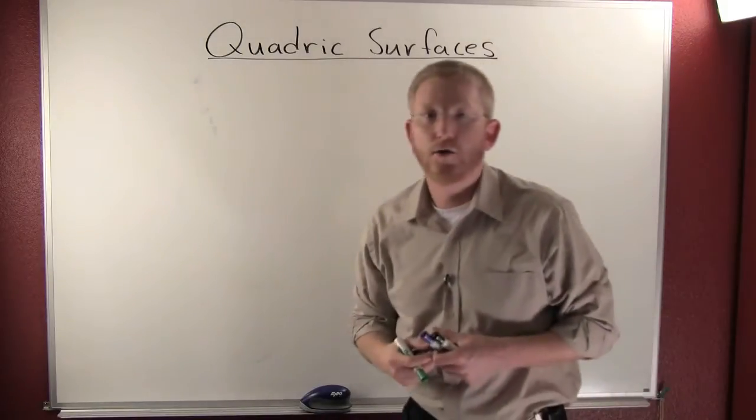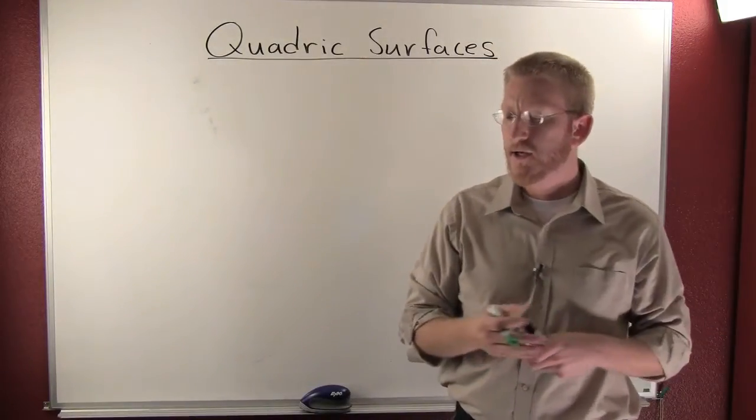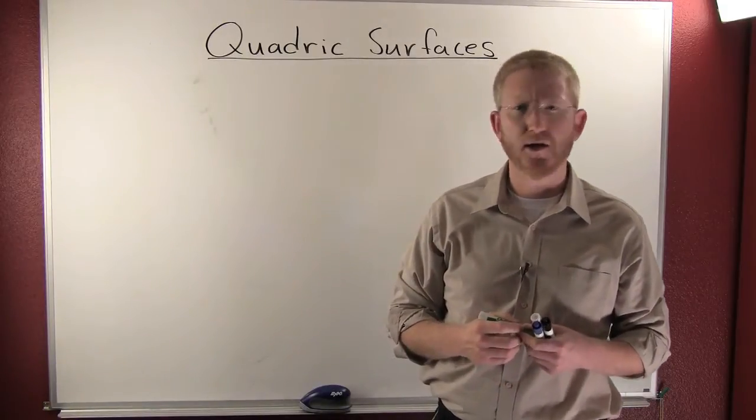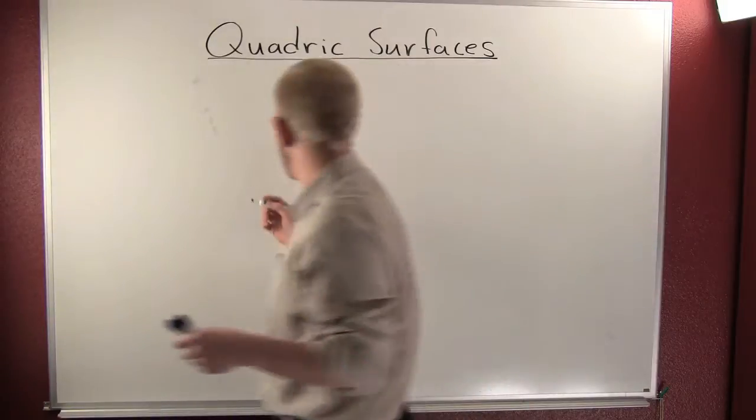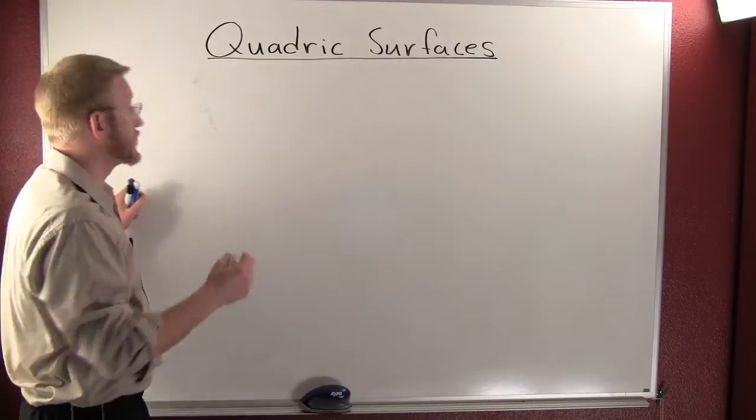Quadric surfaces. We're talking about three-dimensional conic sections. And in order to talk about these three-dimensional conic sections, we should probably go back and talk about conic sections themselves. There are some standard conic sections. Why don't we go ahead and we'll take those.